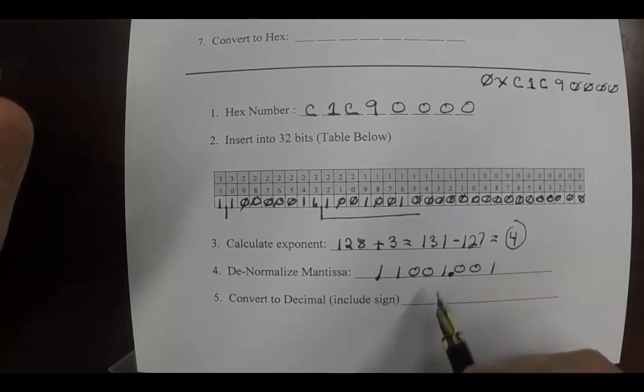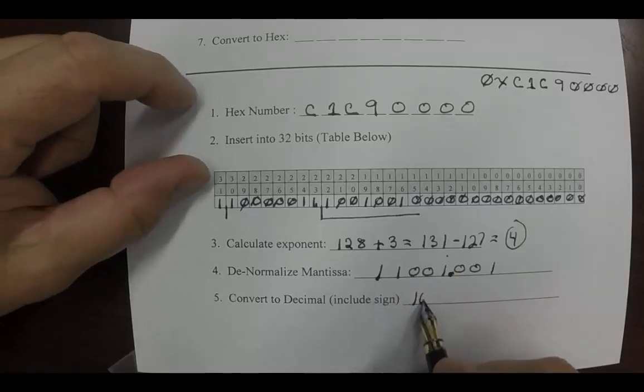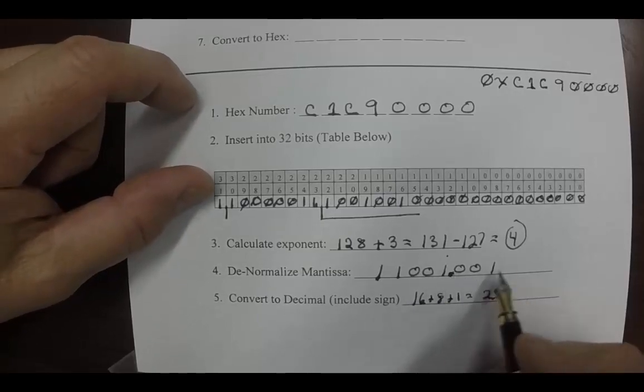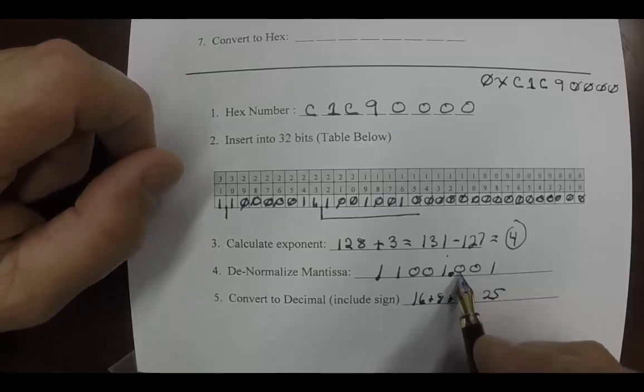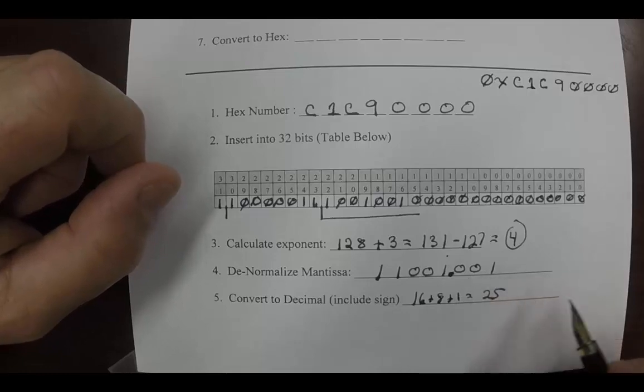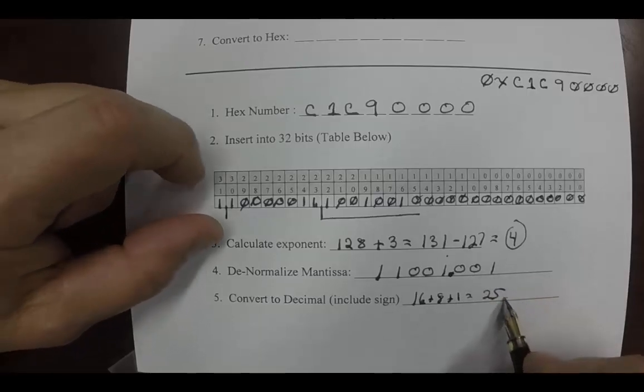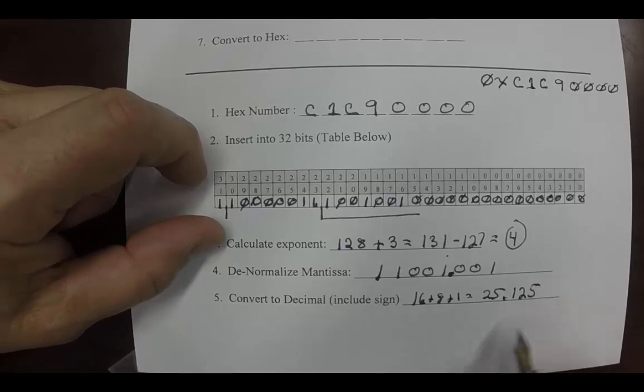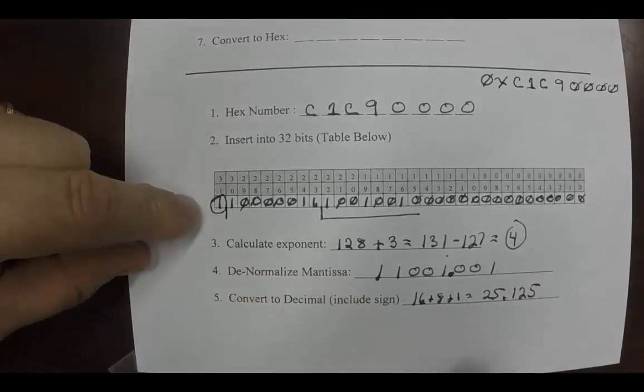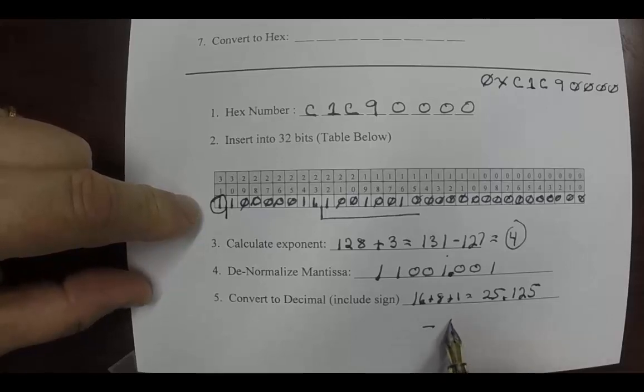And now we can evaluate this number right here as a decimal number. The number to the left of the decimal place, the binary value is a 1, that's an 8, and that's a 16, so 16 plus 8 plus 1 is 25. And then we know this right here to the right of the decimal place, this one's worth a half, that's worth a quarter, and that's worth an eighth, which is 0.125. And let's take the sign, which is a 1, is negative. So the answer is negative 25.125.